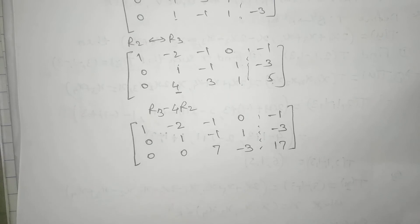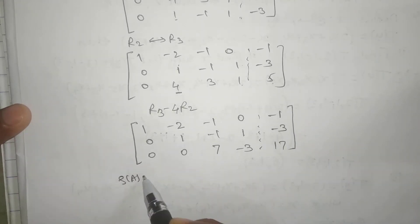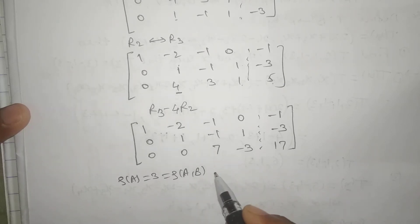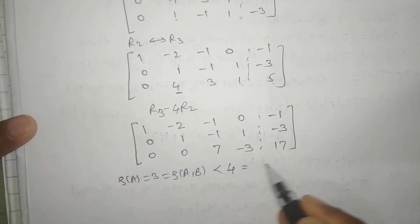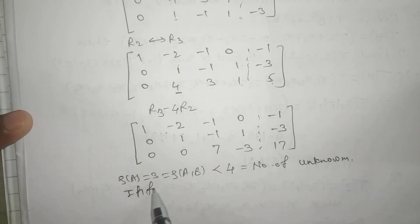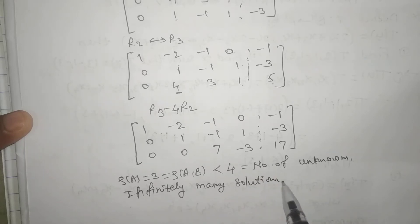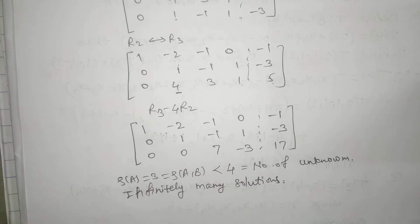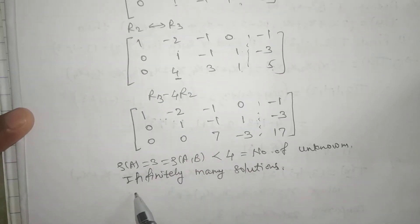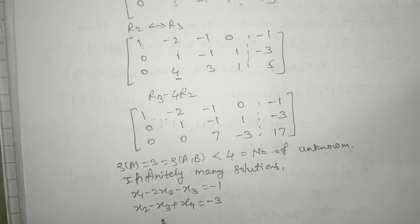The rank of matrix A is 3 (three non-zero rows), which equals the rank of the augmented matrix A|b. The number of unknowns is 4, which is greater than the rank of 3, so there are infinitely many solutions. Writing back the system: x1 minus 2x2 minus x3 equals -1, x2 minus x3 plus x4 equals -3, and 7x3 minus 3x4 equals 17.